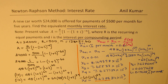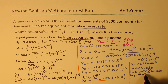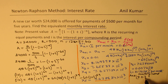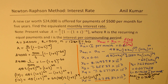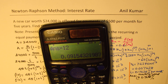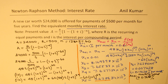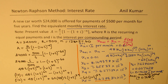So the monthly interest rate is 0.7628%. That is how you solve this type of problem. You also learned how to use your calculator effectively to find the answer iteratively. The per annum rate would be approximately 9%. This is a very good method to calculate interest rates for any such situation. I hope you find it interesting and useful — thanks for watching, please like and subscribe!